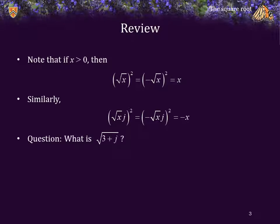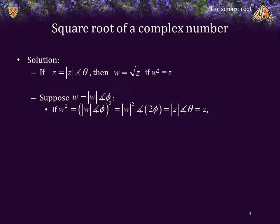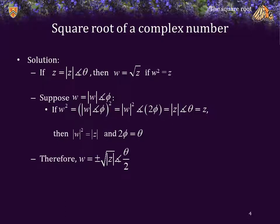The question is, what are the square roots of 3 plus j? Well, if z is equal to the magnitude of z phase theta, then for w to be the square root of z, it's required that w squared equals z. Suppose that w is equal to its magnitude phase phi. If w squared — which is the magnitude of w squared phase 2 phi — equals the magnitude of z phase theta, then the magnitude of w squared must equal z, and 2 phi must equal theta. Thus, the square roots are plus or minus the square root of the magnitude of z, phase theta over 2.